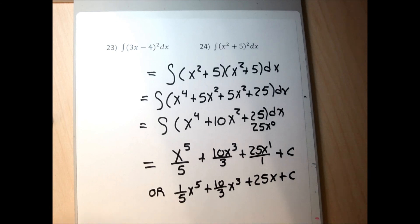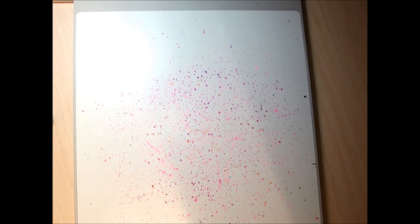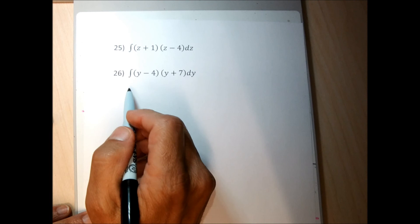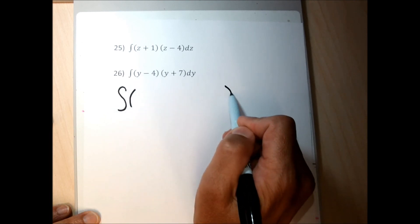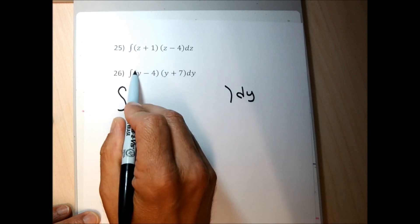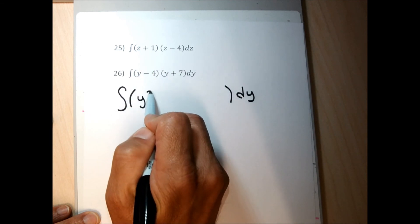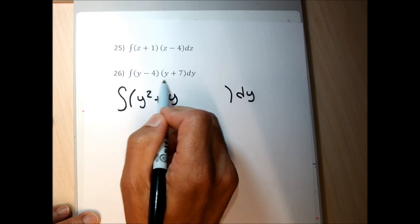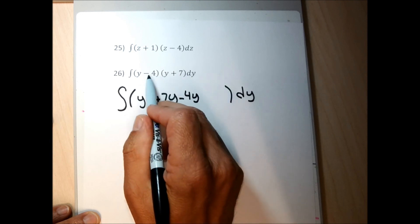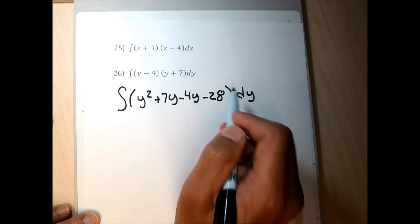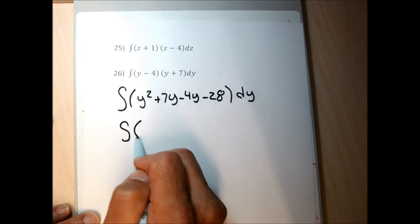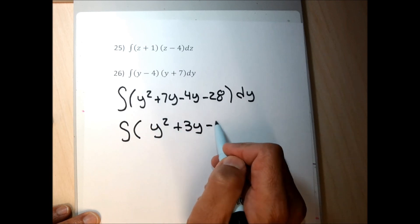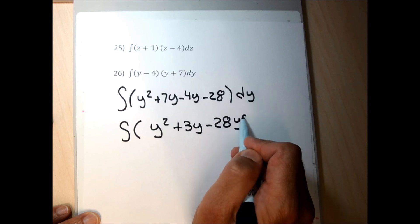Problem 26 also has multiplication, so I get rid of it by FOILing. Firsts: y times y is y squared. Outers: y times 7 is plus 7y. Inners: negative 4 times y is minus 4y. Lasts: negative 4 times 7 is minus 28. Combining like terms: y squared plus 3y minus 28. I write the 28 as 28x to the zero to make integration easier.